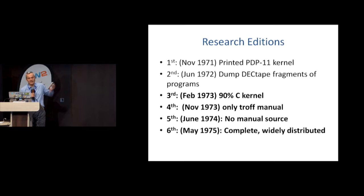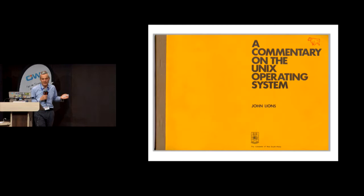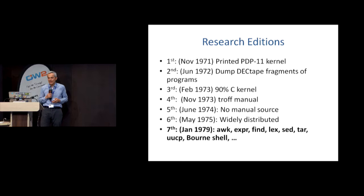Then we have the third, fourth, and fifth editions. The third is significant because it was mainly written in C. The fourth has survived only as the troff manual source code. For the fifth we have the code but not the manual source, and the sixth is complete. It was used as lecture notes by John Lions in Australia to create a course based on the Unix kernel source code — this was illegal for a long period, so it was widely photocopied as a samizdat document.